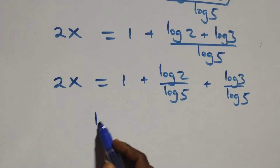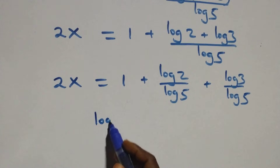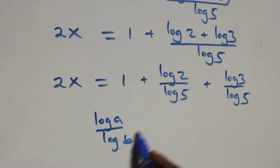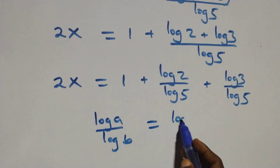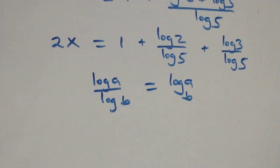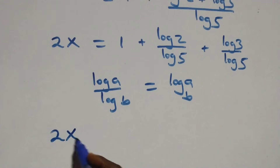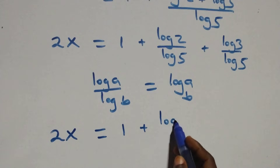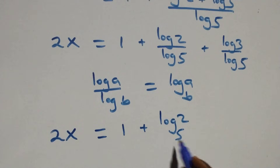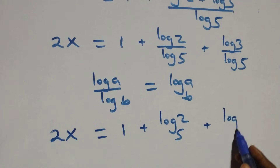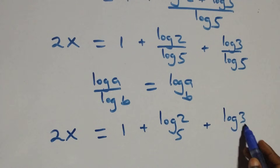Here we apply the change of base formula: log a over log b can be written as log a to base b. So we have 2x equals 1 plus log₅2 plus log₅3.